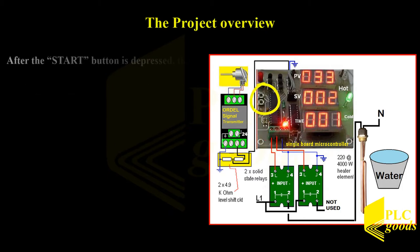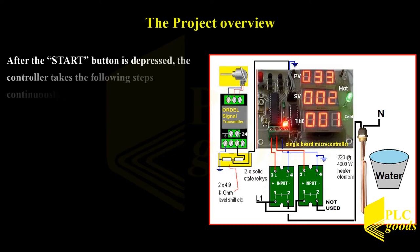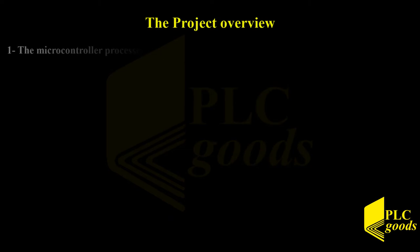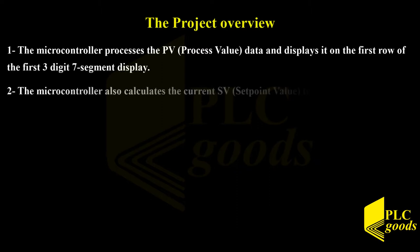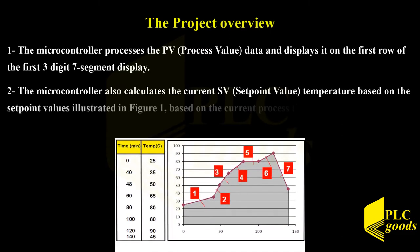After the START button is depressed, the controller takes the following steps continuously. One, the microcontroller processes the PV data and displays it on the first row of the first three-digit seven-segment display. Two, the microcontroller also calculates the current SV temperature based on the setpoint values illustrated in Figure 1 based on the current process time and sends it to the second row of the three-digit seven-segment displays.